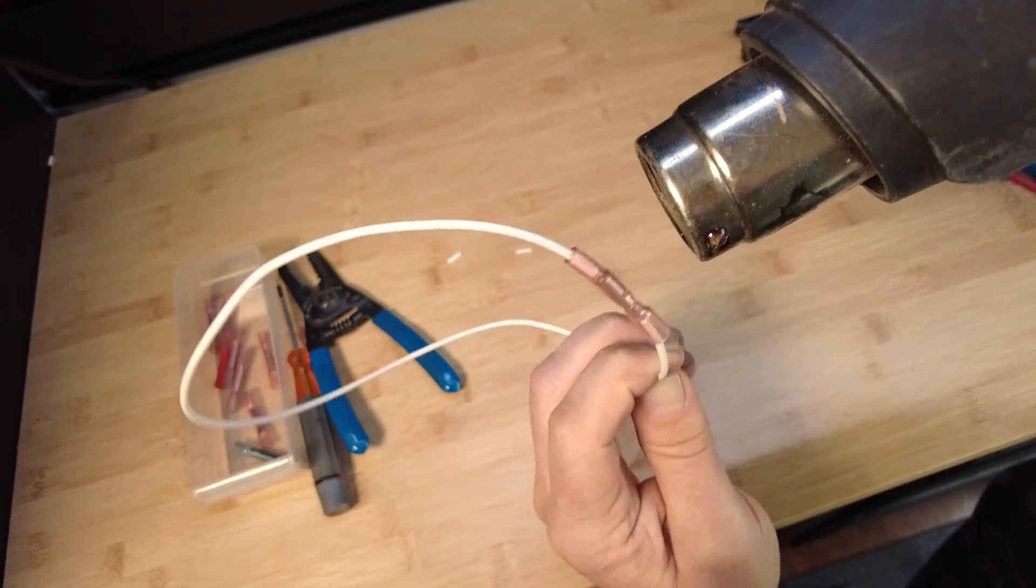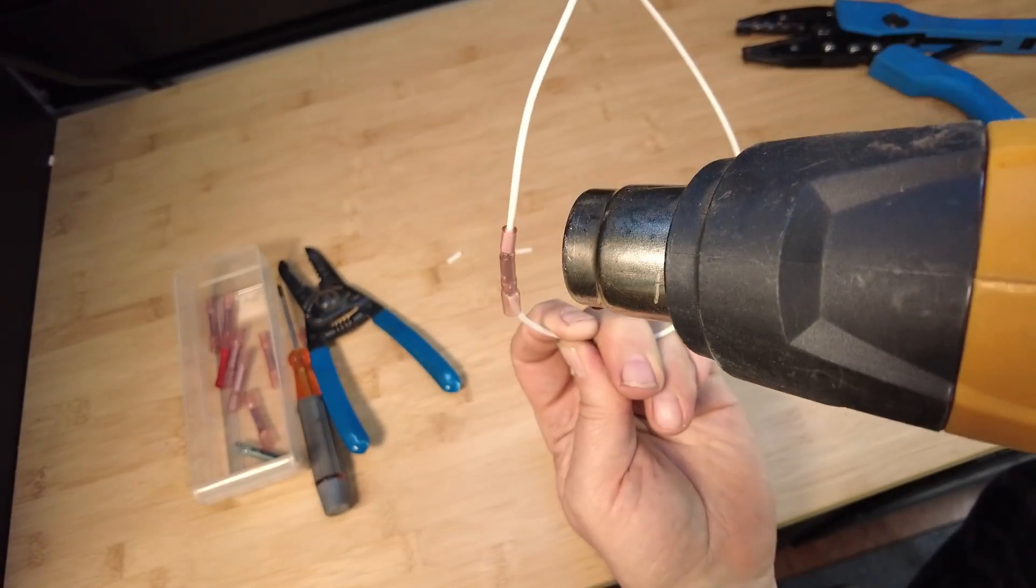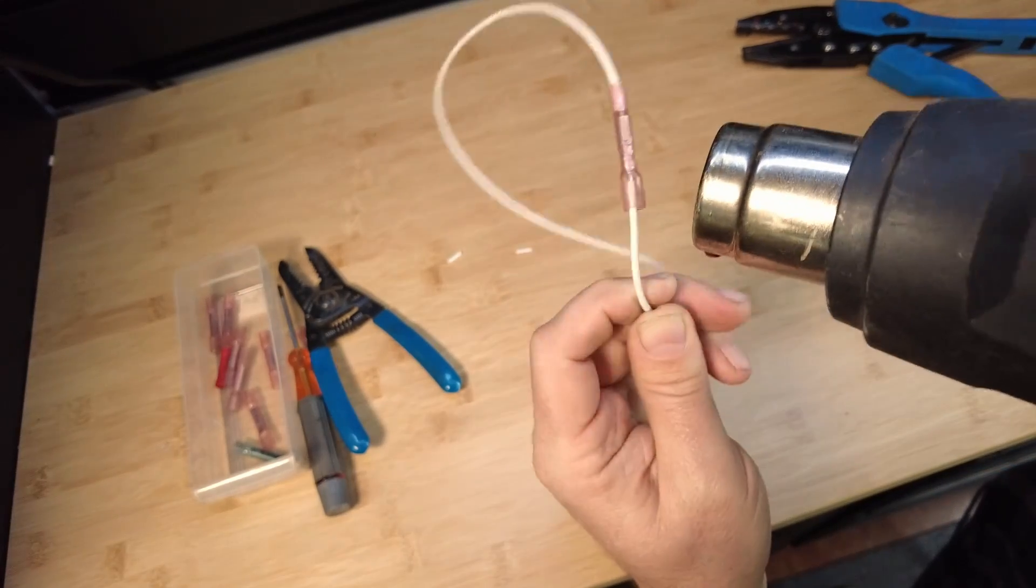You can actually see the adhesive liquefying inside and it's coming out the end a little bit, which is a good sign. We want it to smush out the end a little bit. So that's done. So I'm going to move to the other end now.